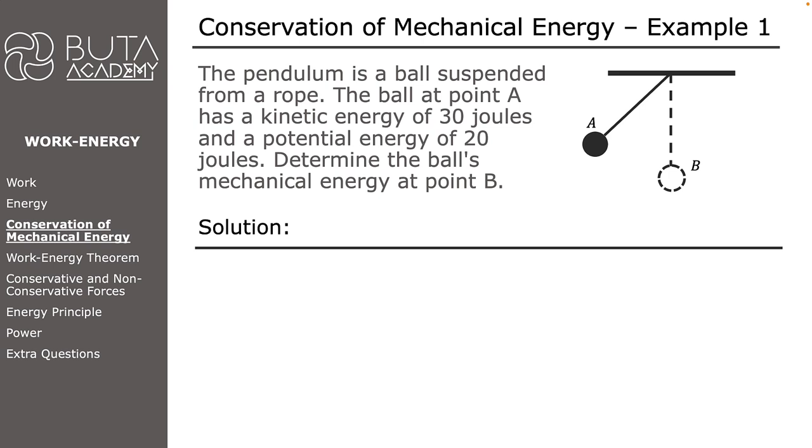According to the law of conservation of mechanical energy, the mechanical energy at point B is equal to the mechanical energy at point A. To calculate the mechanical energy at point A, we are adding kinetic and potential energies of the object.